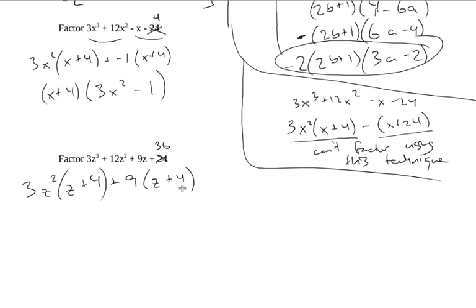If it doesn't happen where you get the same, you just can't continue using this technique. So we get z plus 4, that's the common factor. And we get 3z squared plus 9, that's the left over from here and the left over from here. That's how this ends up factoring.